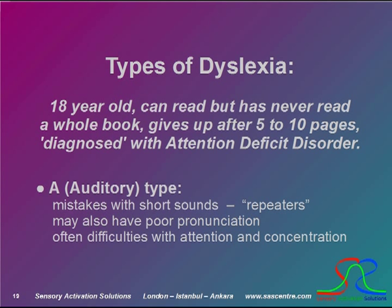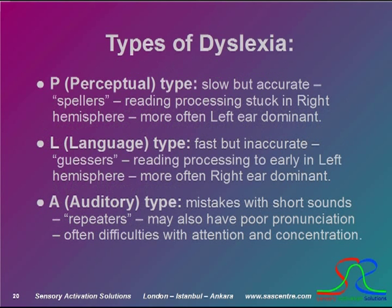We classify him as an A-type dyslexic — A standing for auditory. He made mistakes with short sounds, often asked for instructions to be repeated, and he had poor pronunciation of some sounds. Although it appeared that he had difficulties concentrating, the underlying cause was poor auditory processing. So there we have it: we have not only identified three types of dyslexic behavior, but also unraveled the likely underlying causes. Although some dyslexics may fall into just one category — P or L types — most will also have A-type dyslexia.